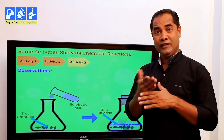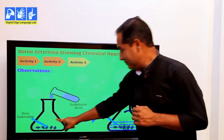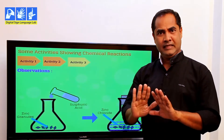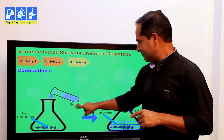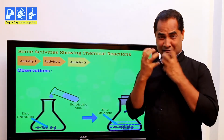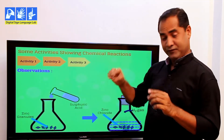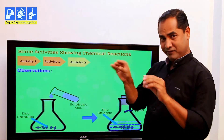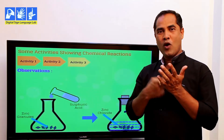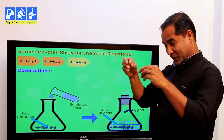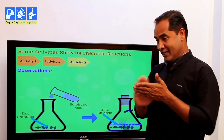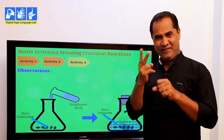Now see activity three. Those are zinc granules. When you add sulfuric acid to zinc granules — and please be careful when you add this acid, it can damage your skin — after you add sulfuric acid to zinc, it changes into zinc chloride. A chemical reaction occurs and hydrogen gas is emitted.